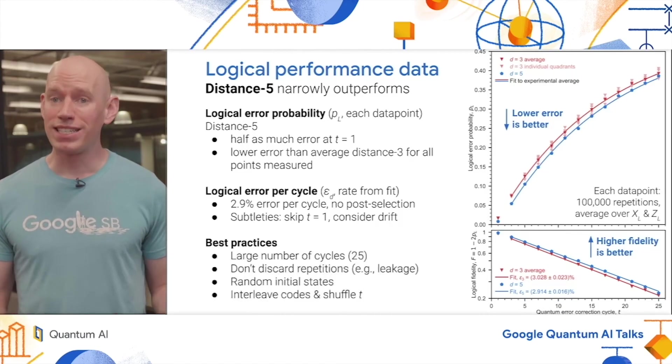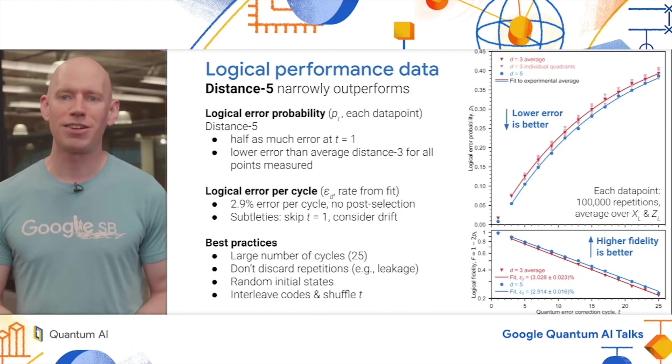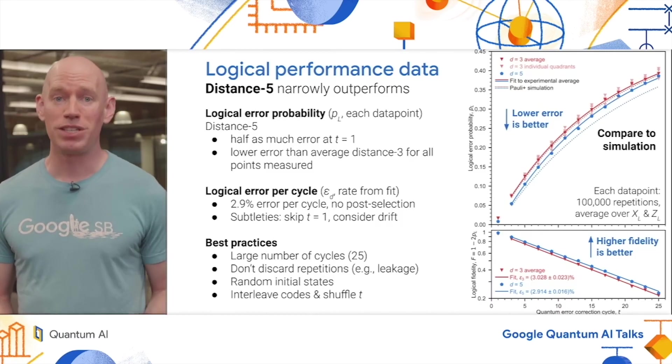I want to highlight a few best practices that we developed while working on this experiment. The first is to use a large number of cycles. Here we're looking at 25. We don't discard any of the repetitions, for example, due to leakage. We also use random initial states, which is another time boundary effect to try to start the codes on equal footing. We interleave the codes and shuffle the time order in which we take them in order to remove any effects due to systematic drift over time. We can also compare to a simulation and we see reasonable agreement.